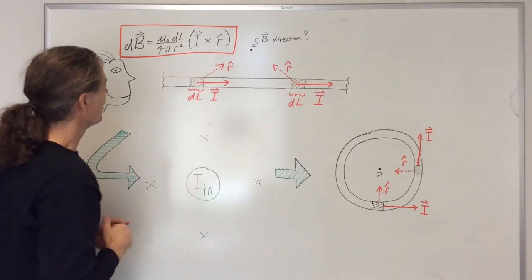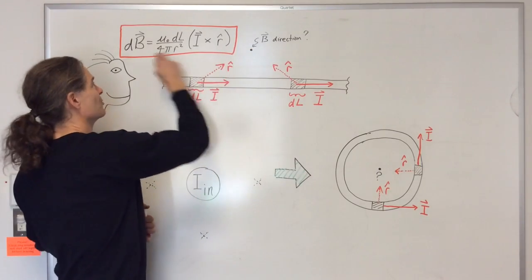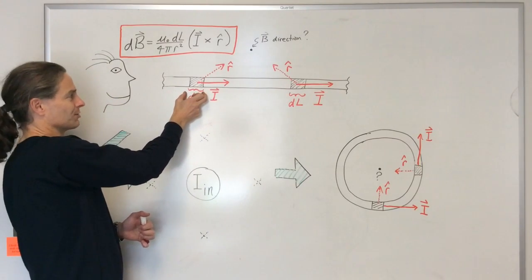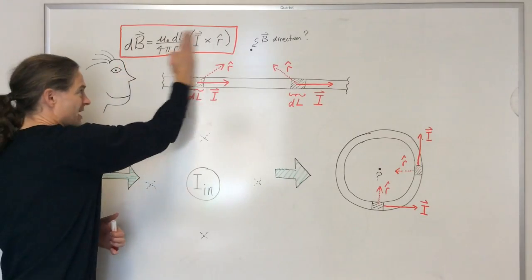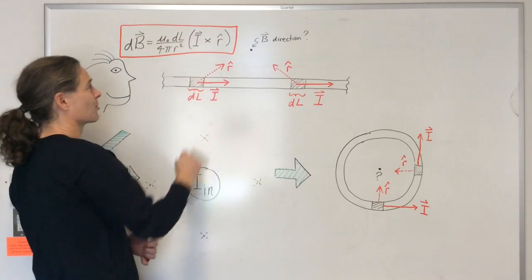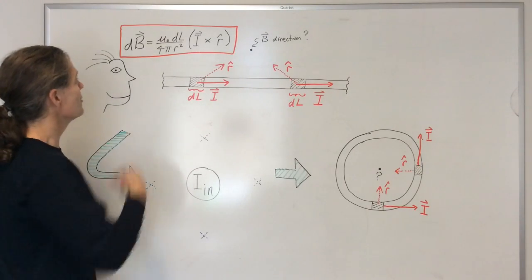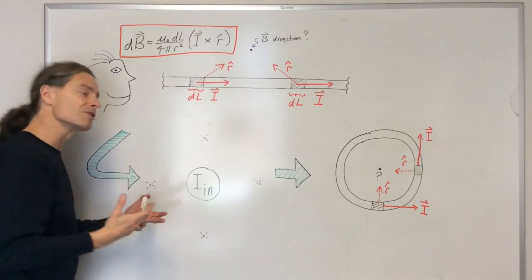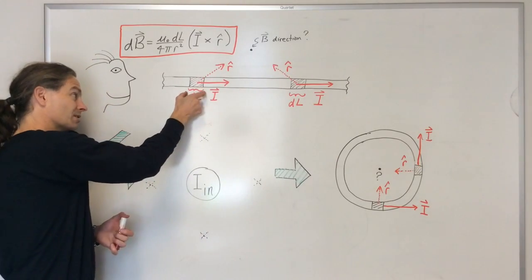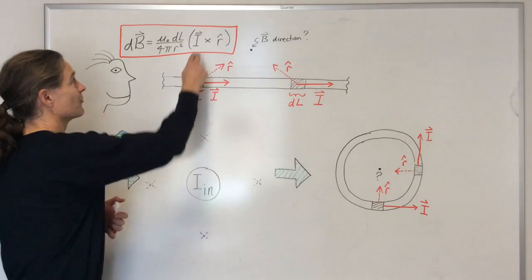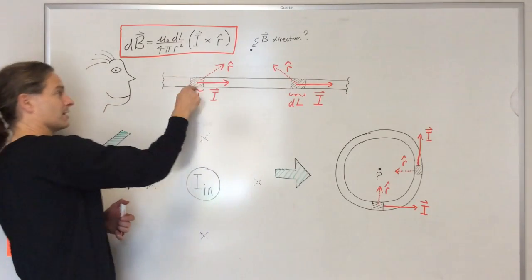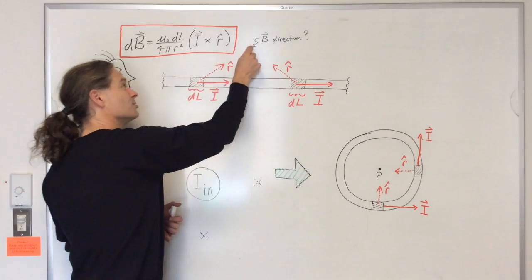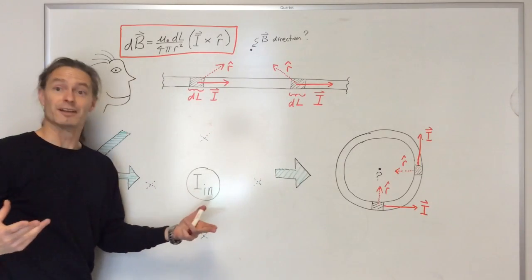The Biot-Savart law relates the magnetic field contribution dB at some location to the current element producing that magnetic field contribution. There's a magnitude and a direction associated with the cross product, and it's the direction we're going to talk about. The direction of the magnetic field will necessarily be the direction of this cross product — the cross product of the current at that location and the unit vector r-hat pointing from the current element to the location of the magnetic field.